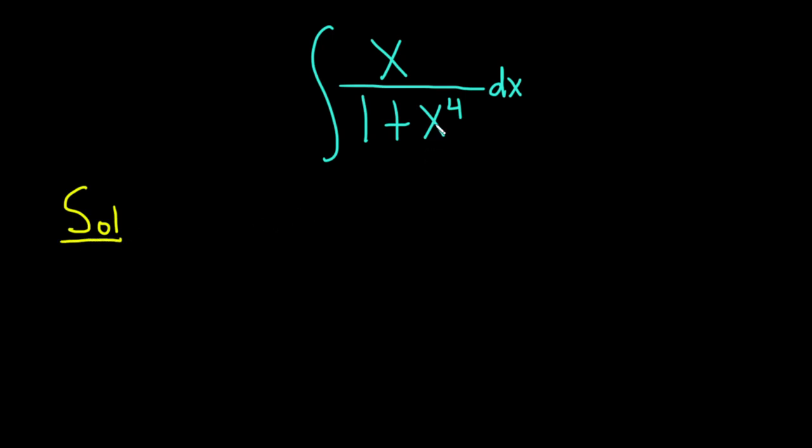So let's start by rewriting the denominator. We can write this as the integral of x over 1 plus, and so x to the 4th is really x squared squared dx. This is true because properties of exponents say that whenever you have x squared squared, you multiply the twos. The 2 times 2 is 4, so all is good.